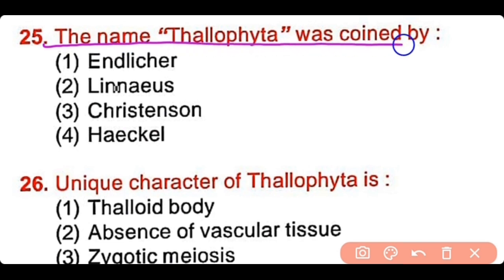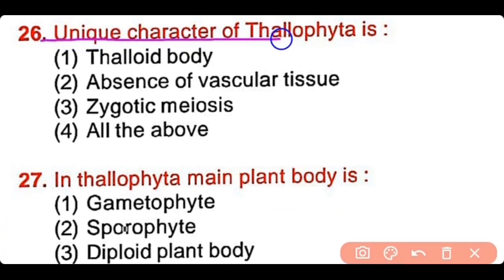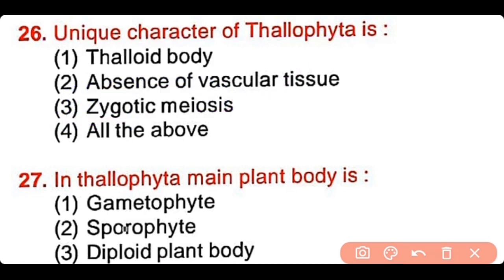Question number 25: The name thallophyta was coined by Endlicher, Linnaeus, Christensen, or Haeckel? The correct answer is option 1. Endlicher coined the term thallophyta for the first time. Question number 26: The unique character of thallophyta is a thaloid body, absence of vascular tissue, zygotic meiosis, or all of the above? The correct answer is option 3. The unique character of thallophytes is the presence of zygotic meiosis.